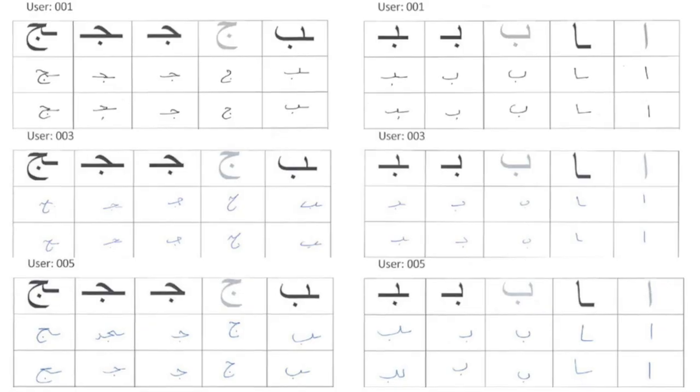We worked on the character shapes and found that some character shapes are more suitable for this kind of work while some are not. We tried to find out which character shapes are better to identify or verify the writers. This was the crux of the work.